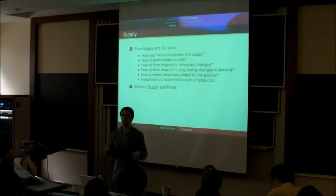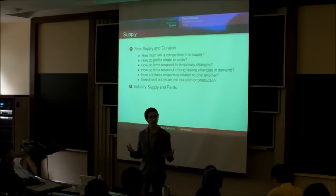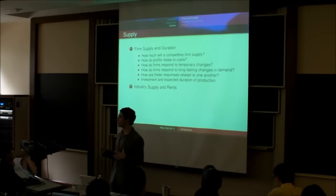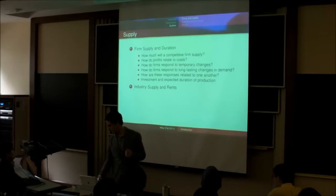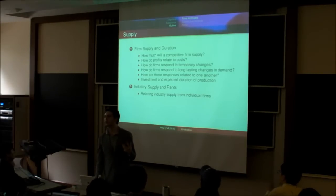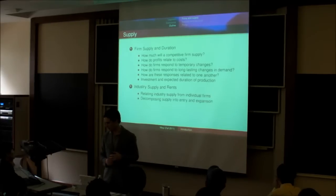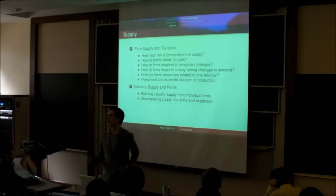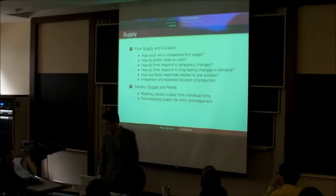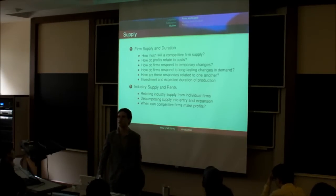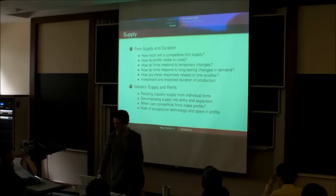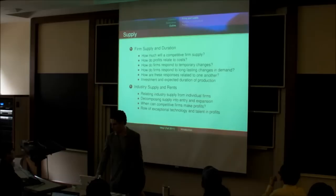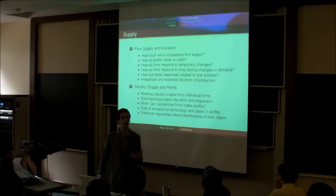We'll then move from an individual firm to an industry as a whole. And we'll think about how the profits that a firm makes relates to what other firms are in the industry. How do we build up the industry supply curve from the individual firm's supply curve? How that is made up both of the entry of new firms into the industry and the expansion of production of existing firms. When do firms, even when they're competitive, make profits? What is the role of exceptional talent and ability by the managers in the firm's profits? We'll talk about some of the empirical regularities of the size and profits that firms make.